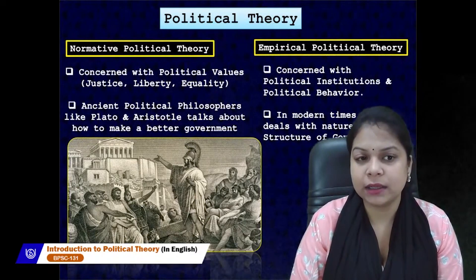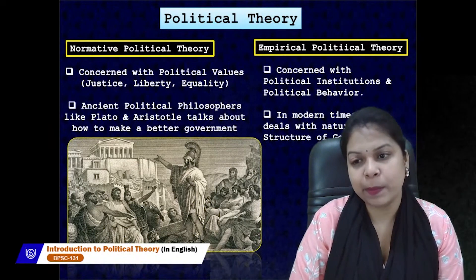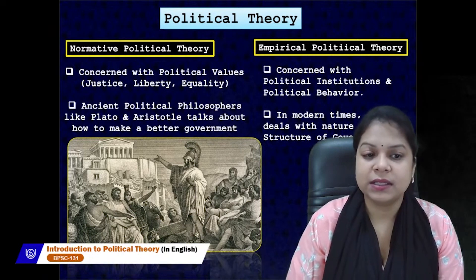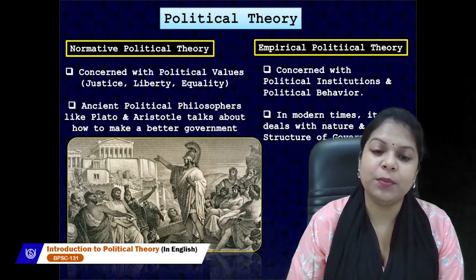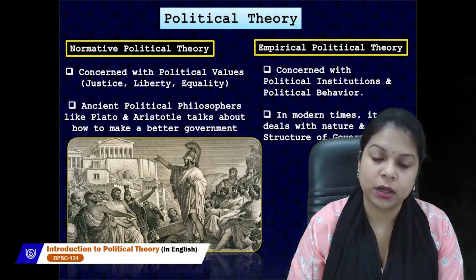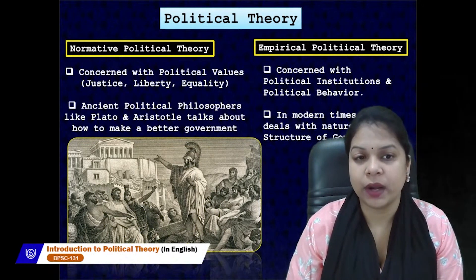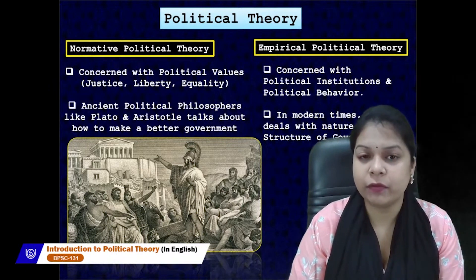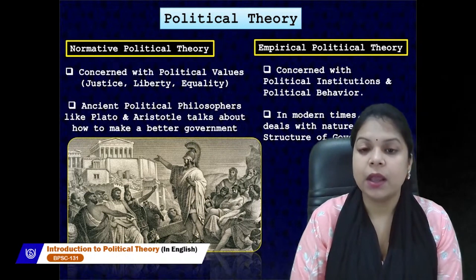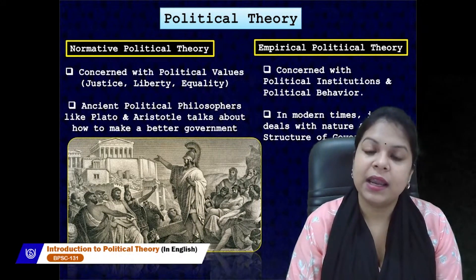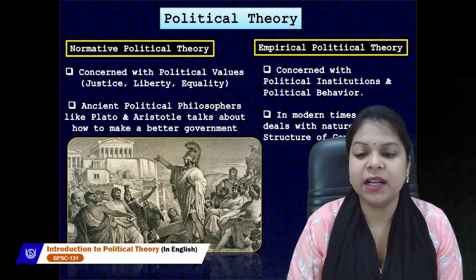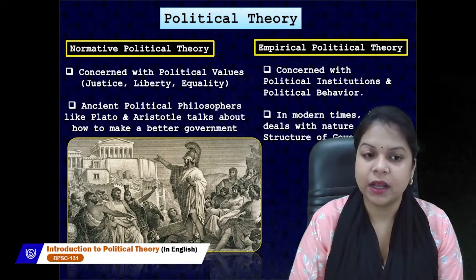There are two kinds of political theory. Normative political theory is concerned with political values such as justice, liberty, and equality; ancient political philosophers like Plato and Aristotle asked how to make a better government. Empirical political theory is concerned with political institutions and political behavior — in modern times it deals with the nature and structure of the government. So there is a distinction between normative and empirical political theory.